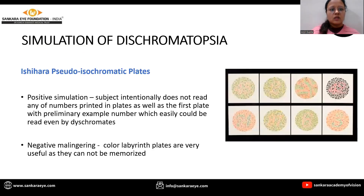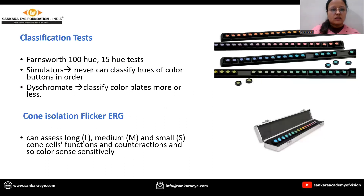Pseudo-isochromatic plates: in positive simulation, the subject intentionally does not read any of the numbers printed in the plates, including the first plate, which is the preliminary example plate that can easily be read even by dichromats. In negative malingering, color plates are useful because they are very hard to memorize, making it easy to catch the malingerer.